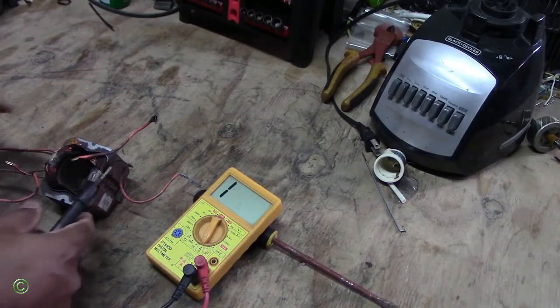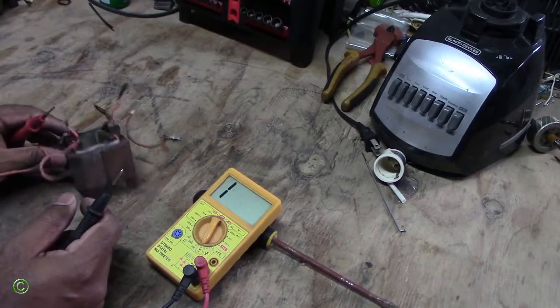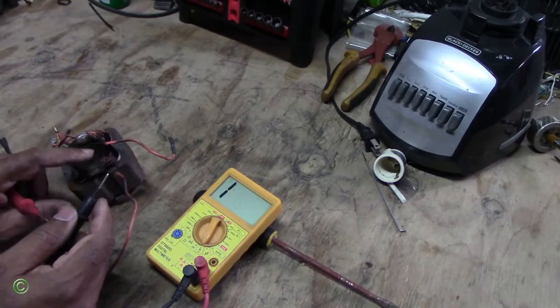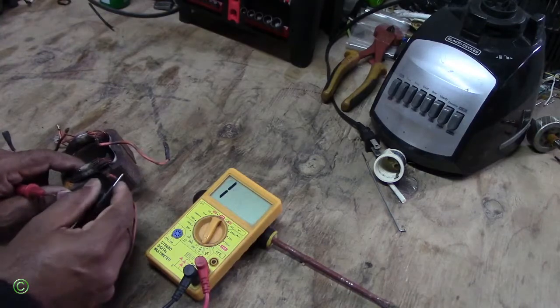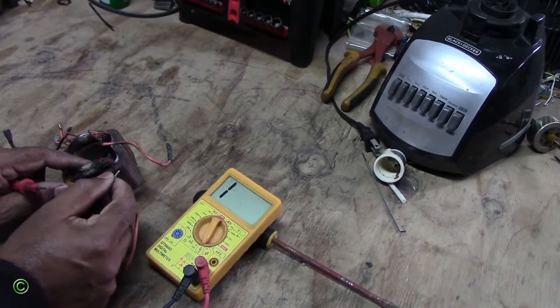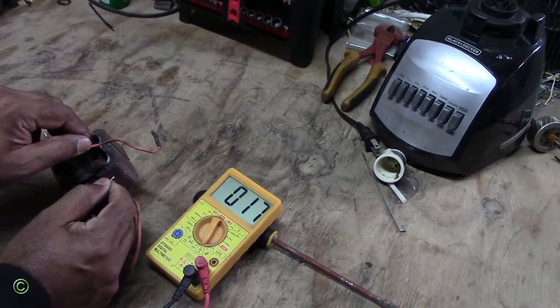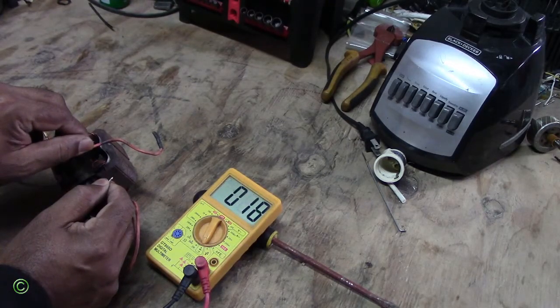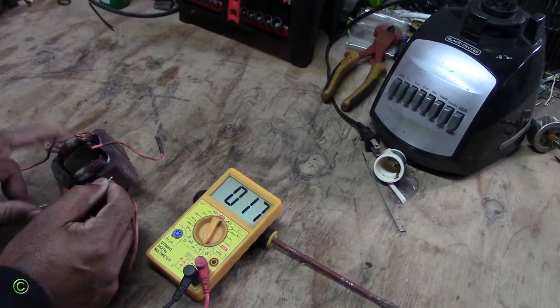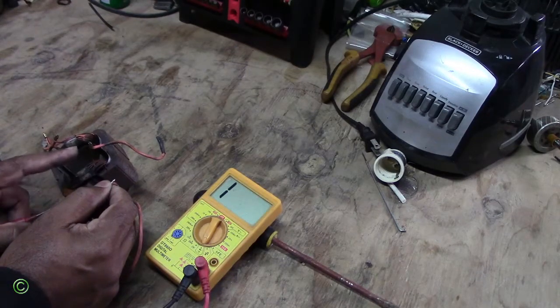We're going to check the continuity on one side first. I'll put one probe on this end and the other probe on the other end. You get a reading, so this is working. If it wasn't getting any reading, the winding would have a short.